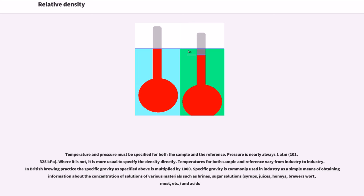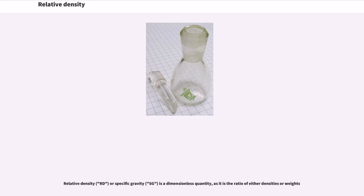Temperature and pressure must be specified for both the sample and the reference. Pressure is nearly always one atmosphere (101.325 kilopascals); where it is not, it is more usual to specify the density directly. Specific gravity is commonly used in industry as a simple means of obtaining information about the concentration of solutions of various materials such as brines, sugar solutions, syrups, juices, honeys, brewer's wort, must, and acids.